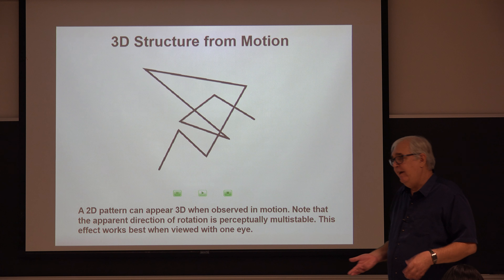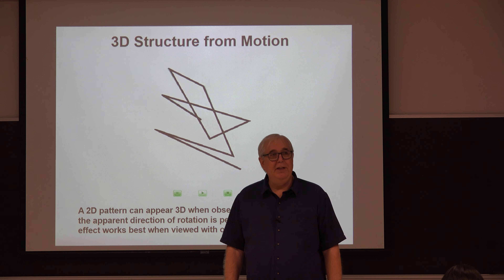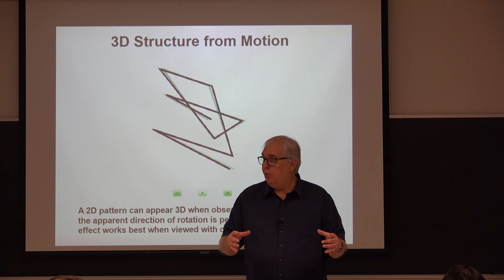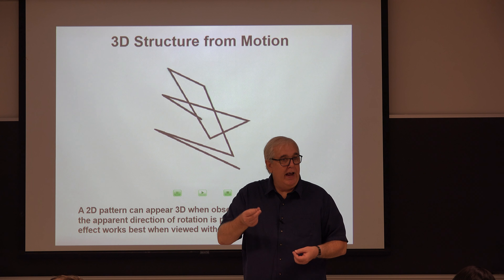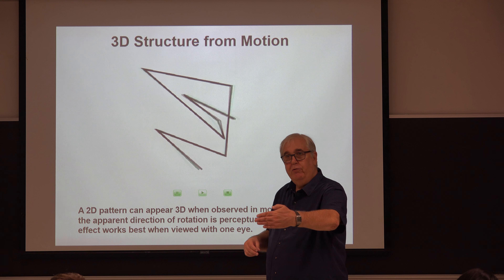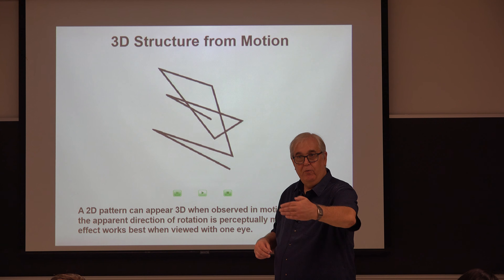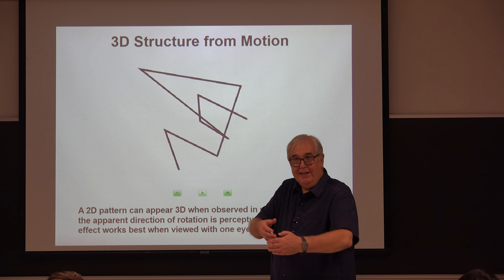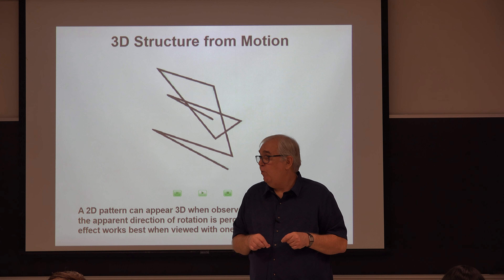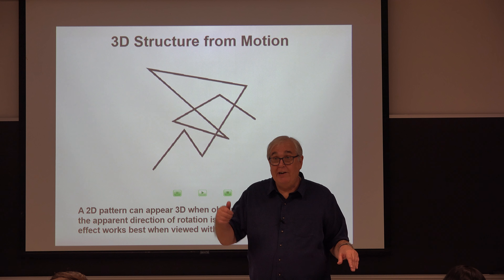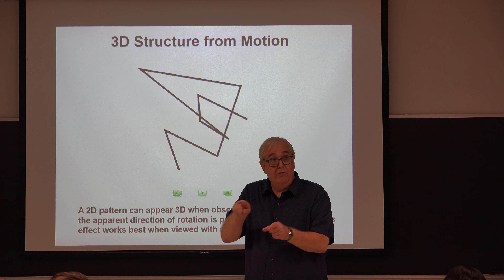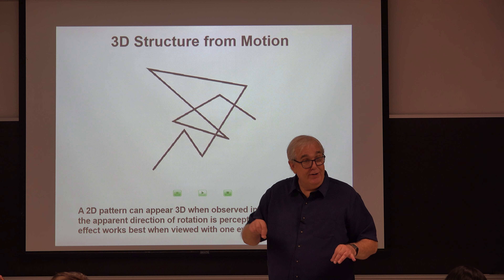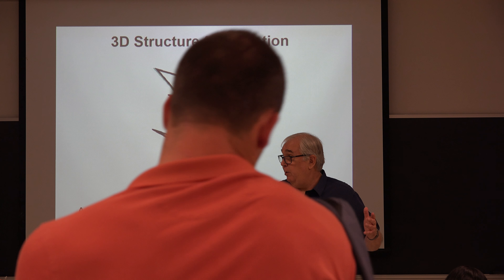Back in 1957, they didn't have computer graphics. The way Wallach was able to do this: he had a turntable and he would take a bent wire coat hanger, put it on the turntable, and then had a translucent screen between the observer and the turntable. He shone light on the turntable side so the bent wire coat hanger would form a shadow. Observers watching the shadow when stationary said it looked like a random 2D set of lines. But as soon as the motion started, they said it looks like a three-dimensional object.